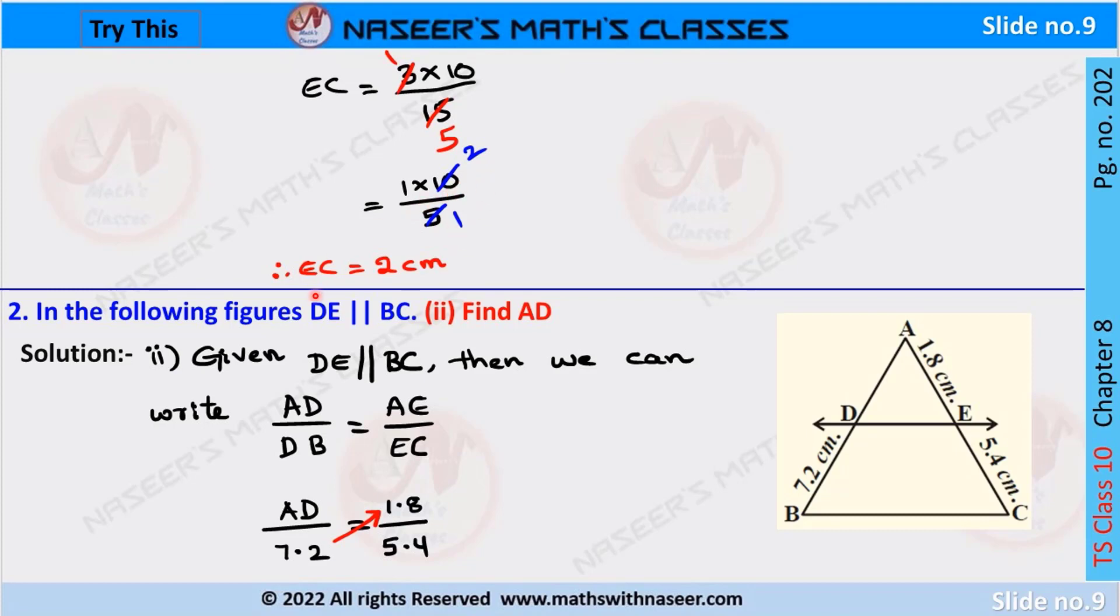Next, second problem, second part. Given: In triangle ABC, DE is parallel to BC.